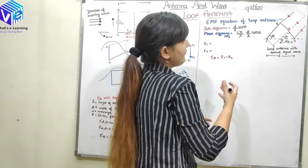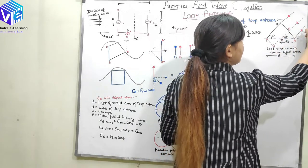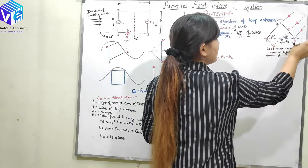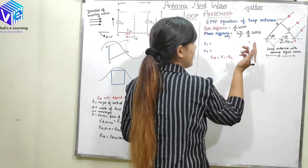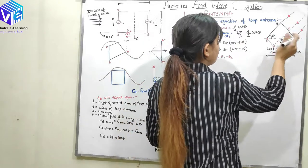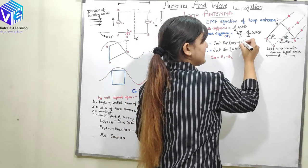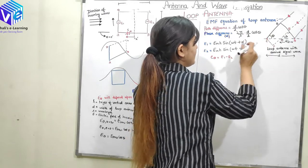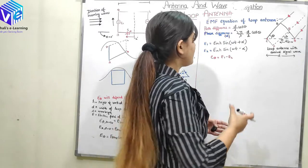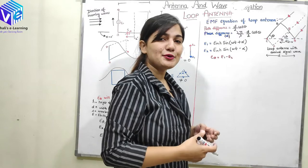E1 is the electric field induced at arm A and E2 is the electric field induced at arm C. With reference at O, the ray at A arrives first (leading) and the ray at C arrives last (lagging). So the electric field at A leads and the electric field at C lags. I can write: E1 = E_m × H × sin(ωt + α) — leading by factor α — and E2 = E_m × H × sin(ωt − α). These are the two electric fields induced in the two vertical arms.